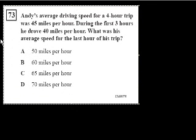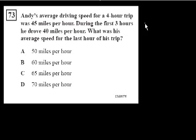Problem 73. Andy's average driving speed for a four-hour trip was 45 miles per hour. During the first three hours, he drove 40 miles per hour. What was his average speed for the last hour of his trip?